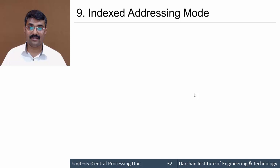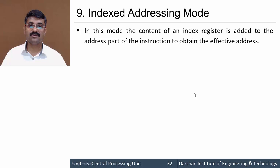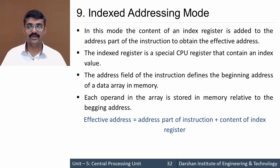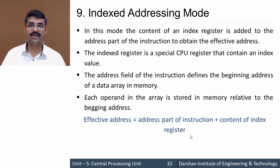Similarly, we have indexed addressing mode. In this mode the content of the index register — a special type of register — is added to the address part of the instruction to obtain the effective address. Comparing with relative mode: there the program counter was added; here the index register is added. Effective address = address part of instruction + content of index register. This addressing mode is used for accessing arrays from memory, since arrays are sequential storage of data.